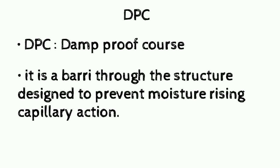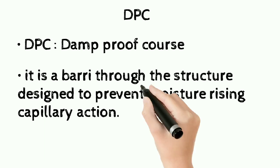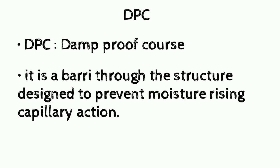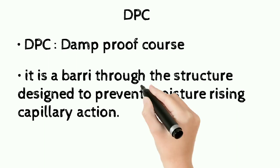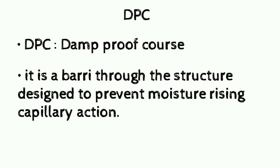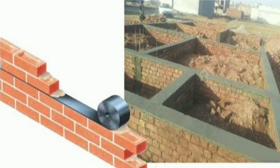The last one is DPC. DPC stands for Damp Proof Course. It is a barrier through the structure designed to prevent moisture rising by capillary action — such a phenomenon is known as rising damp. Rising damp is the effect of water rising from the ground into a property. The damp proof course may be horizontal or vertical. DPC is used to stop dampness in buildings and is provided at natural ground level to prevent the upward flow of water into the building and to prevent efflorescence.